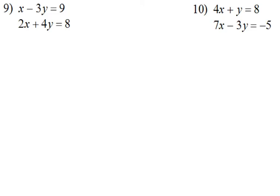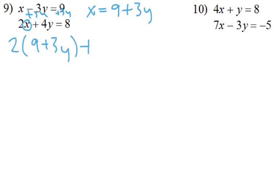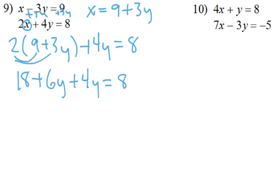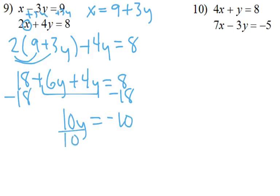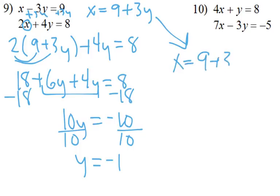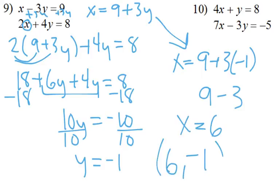Last two. On number 9, I want to solve for x by adding 3y to both sides, so it doesn't matter if I solve for x or y — we just want to get one variable by itself. Now I can replace that x with 9 plus 3y. Then we simplify: that becomes 10y, subtract 18, becomes equal to negative 10, divide by 10, and y equals negative 1. Go back and figure out what x is — multiply by negative 1 — and we get x equals 6. Our y is negative 1. That's our answer.